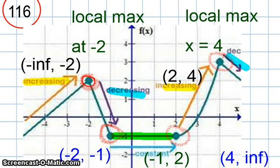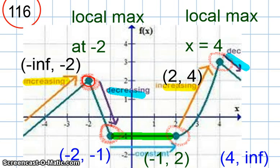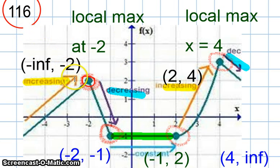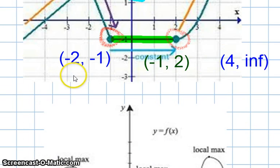We also have what's called a local min. To identify the local min, instead of looking for a turning point where the graph goes from increasing to decreasing, we're looking for when the graph goes from decreasing to increasing. Unfortunately in this case, we don't have anything on the graph going from decreasing to increasing — we have decreasing to constant, but no local min here. It has to go from decreasing to increasing to be a local min. My suggestion is you draw this picture on page 116 and identify the local maxes and where the function is increasing, decreasing, and constant.